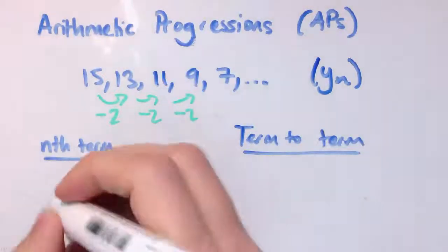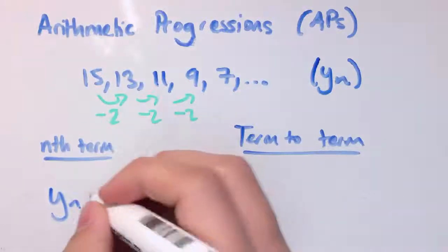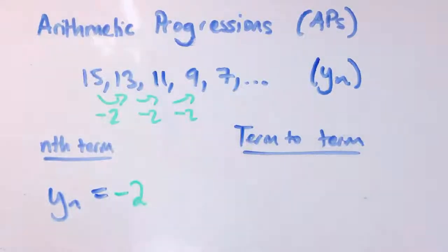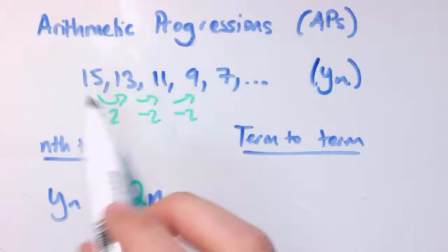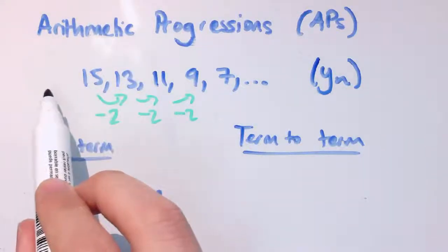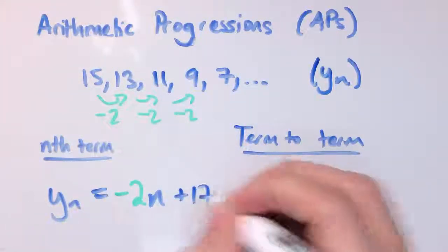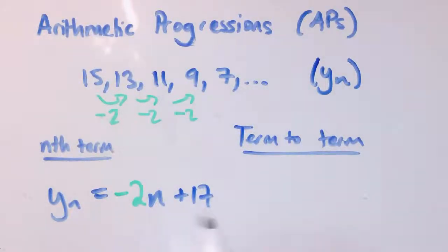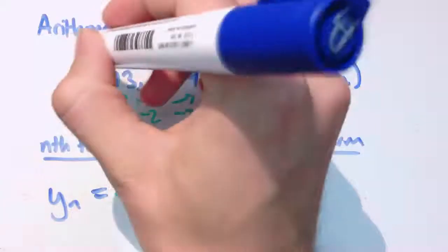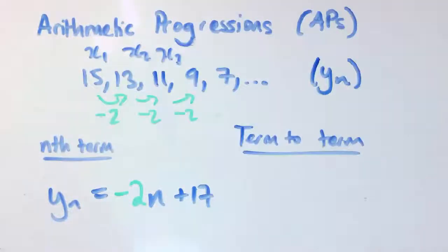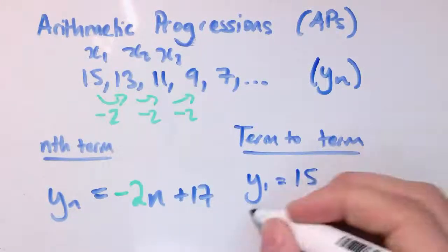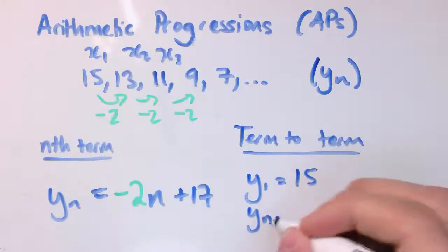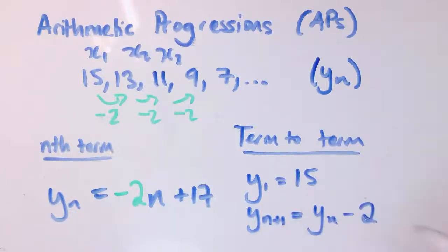In the nth term definition, y_n is minus 2n. To make the first term work, if the sequence had started one term earlier it would have been 17, so y_n equals minus 2n plus 17. You can check that works for different values of n. For the term-to-term definition, y_1 is 15, and y_{n+1} equals y_n minus 2.